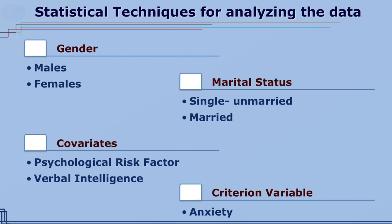As per the objectives, gender has two levels: male and female. Single/unmarried and married were the two levels of marital status. Psychological risk factor and verbal intelligence were the two covariates, and anxiety was the criterion variable. Thus, the data can be analyzed with the help of a two-by-two factorial design ANCOVA, or two-way ANCOVA using SPSS. The output of SPSS is given in Tables 1 and 2.